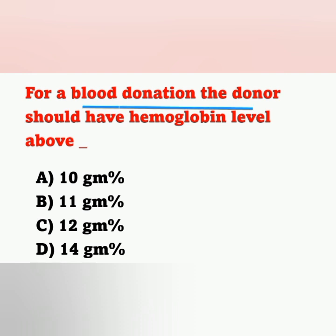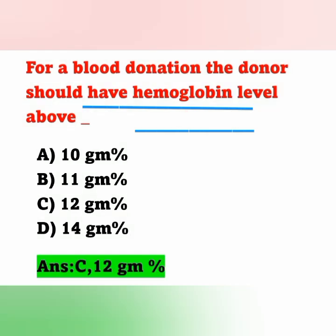Question 14: For blood donation, the donor should have a hemoglobin level above — A) 10 g%, B) 11 g%, C) 12 g%, D) 14 g%. The correct answer is option C — the donor should have hemoglobin above 12 grams per 100 ml of blood.